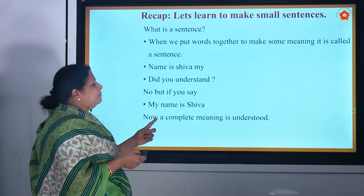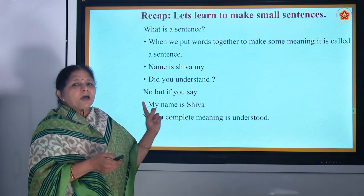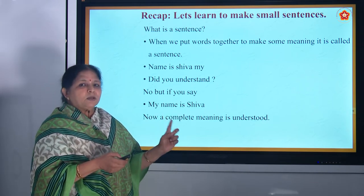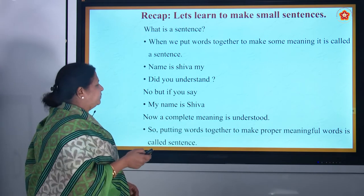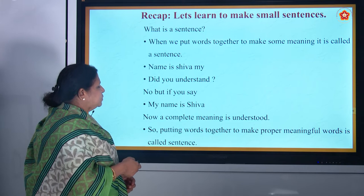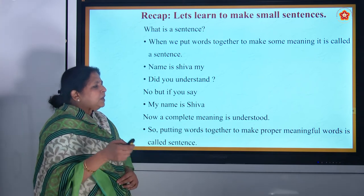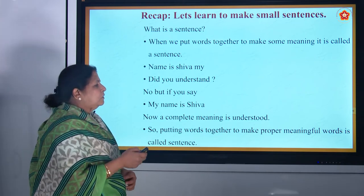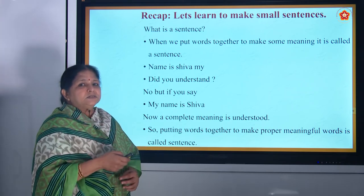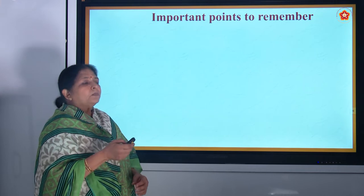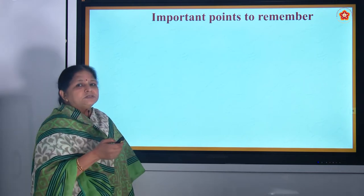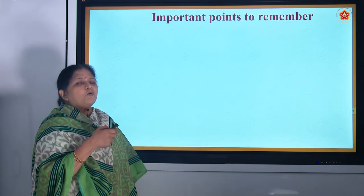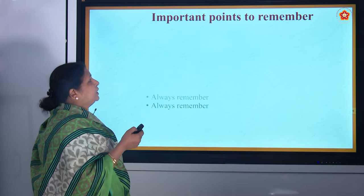A complete meaning is understood — 'My name is Shiva.' You understand the complete meaning. Putting words together to make a proper meaning is called a sentence. So now all of you have understood the sentence — it was a quick recap of what is a sentence.